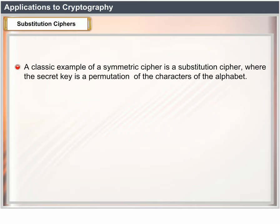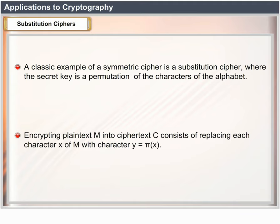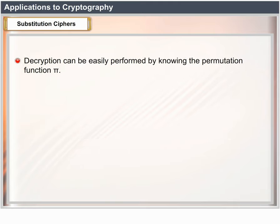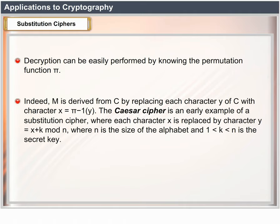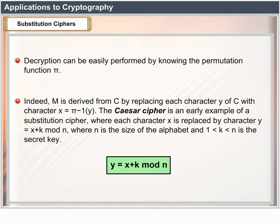Substitution Ciphers: a classic example of a symmetric cipher is a substitution cipher, where the secret key is a permutation π of the characters of the alphabet. Encrypting plain text M into ciphertext C consists of replacing each character X of M with character Y = π(X). Decryption can be easily performed by knowing the permutation function π: M is derived from C by replacing each character Y of C with X = π⁻¹(Y). The Caesar cipher is an early example of a substitution cipher, where each character X is replaced by Y = (X + K) mod N, where N is the size of the alphabet and K is the secret key.